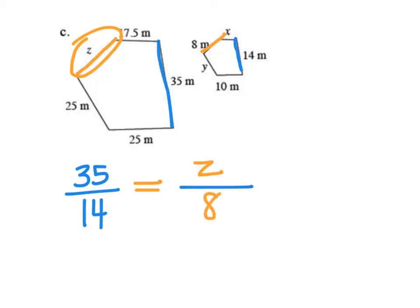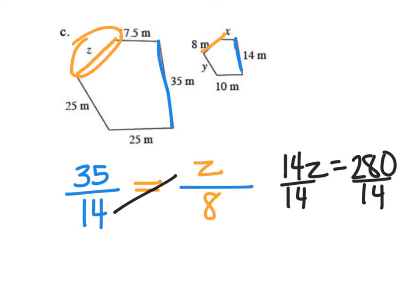And now I'm just going to cross multiply and divide like we've done plenty of times. So 14 times Z is 14Z, and 35 times 8 is 280, and then my last step is to divide by 14. So I'll do 280 divided by 14, and I end up with Z equals 20.